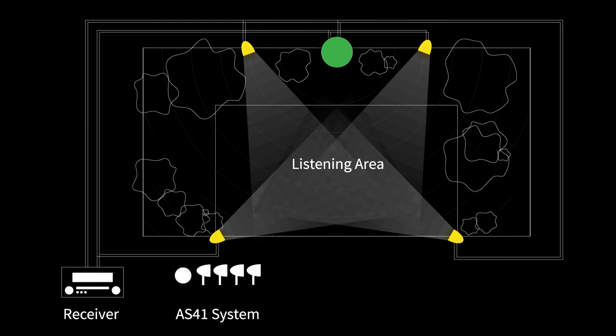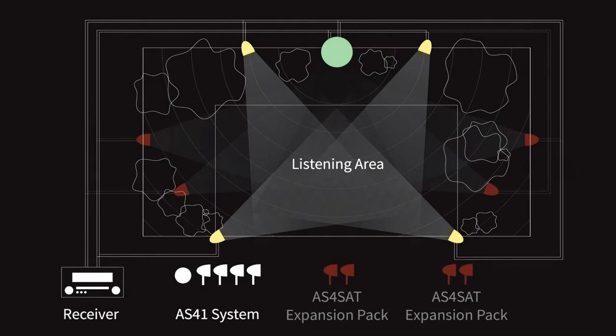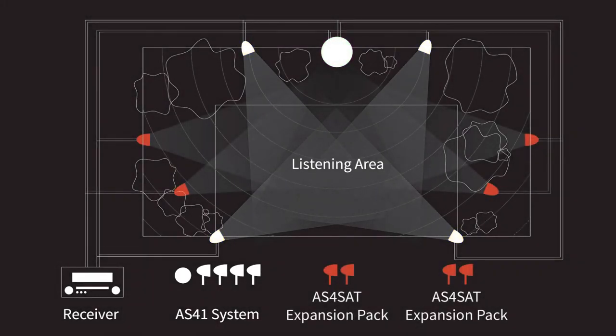The Acoustiscape AS41 system includes four satellites, but you can expand to a total of eight in one system with the AS4 SAT speaker expansion packs. This will allow for perfectly even sound coverage in areas of up to 2,500 square feet.